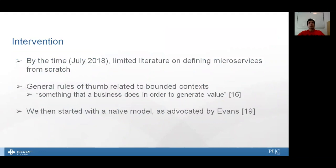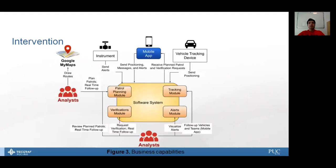Back then, more than two years ago, there was limited literature on defining microservices from scratch. We had some papers conjecturing about processes for decomposing existing monolithic applications into microservices. But there were some general rules related to this definition of bounded contexts. A bounded context is something that a business does in order to generate some value. We started with this naive model, as advocated by Evans in his book Domain-Driven Design. This naive model represents our business capabilities, the central business tasks of the system.